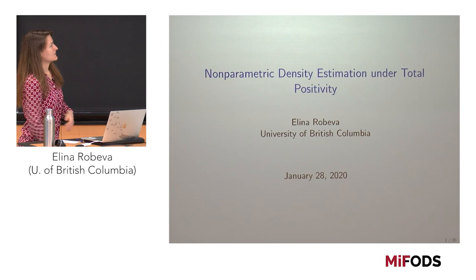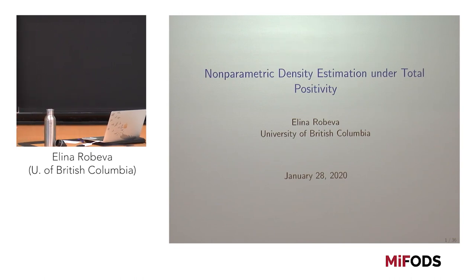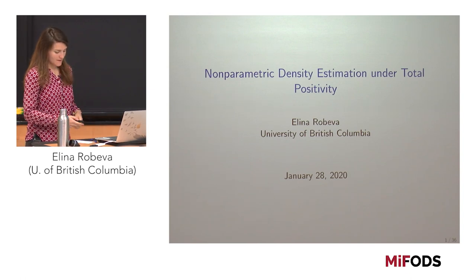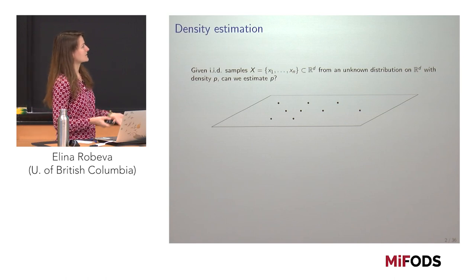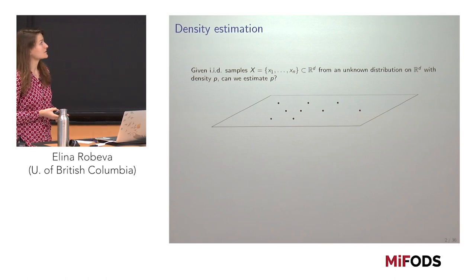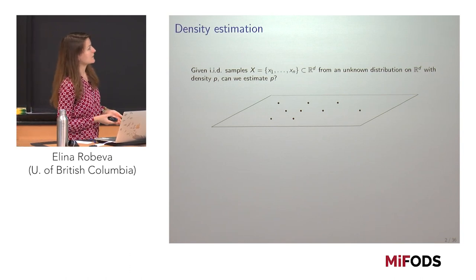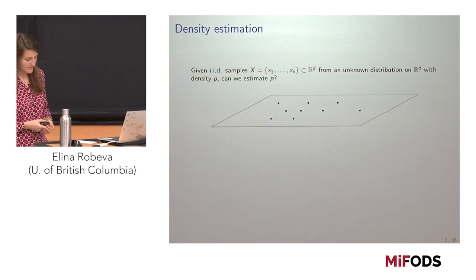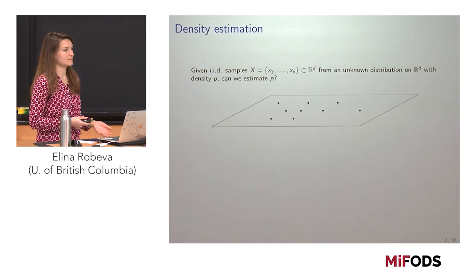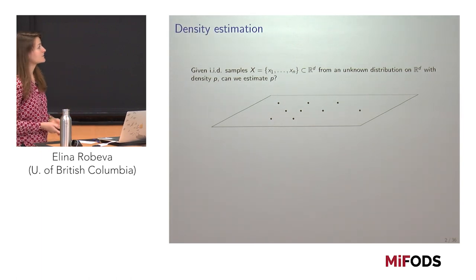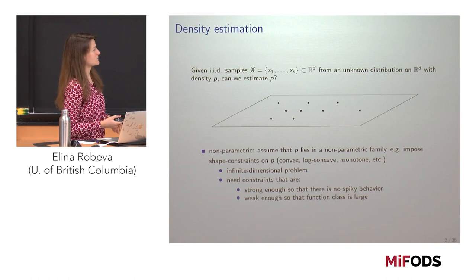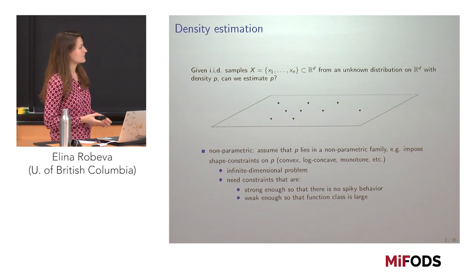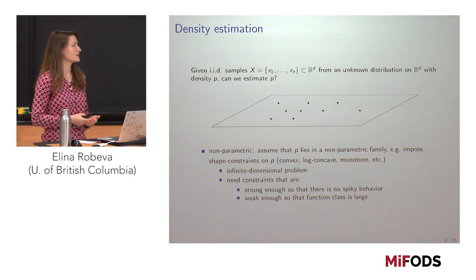Today I'll tell you about nonparametric density estimation under a constraint called total positivity. The talk will mostly be focused on maximum likelihood estimation under this constraint. We're given IID samples from an unknown distribution on R^d with density P, and we'd like to estimate P. Unlike parametric density estimation, where P lies in some family like the Gaussians with finitely many parameters, in the nonparametric case we assume P lies in some nonparametric family. For example, we can impose shape constraints like convexity, monotonicity, or some kind of smoothness.